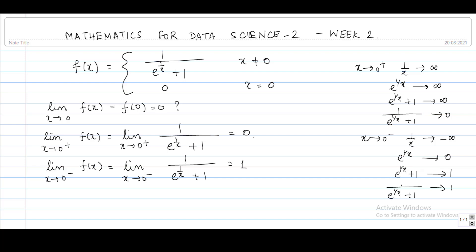This value will be equal to 1. So these two values are not equal — the left hand limit and the right hand limit are not equal. Therefore the limit as x tends to 0 of f(x) does not exist, and so f is not continuous at x = 0.